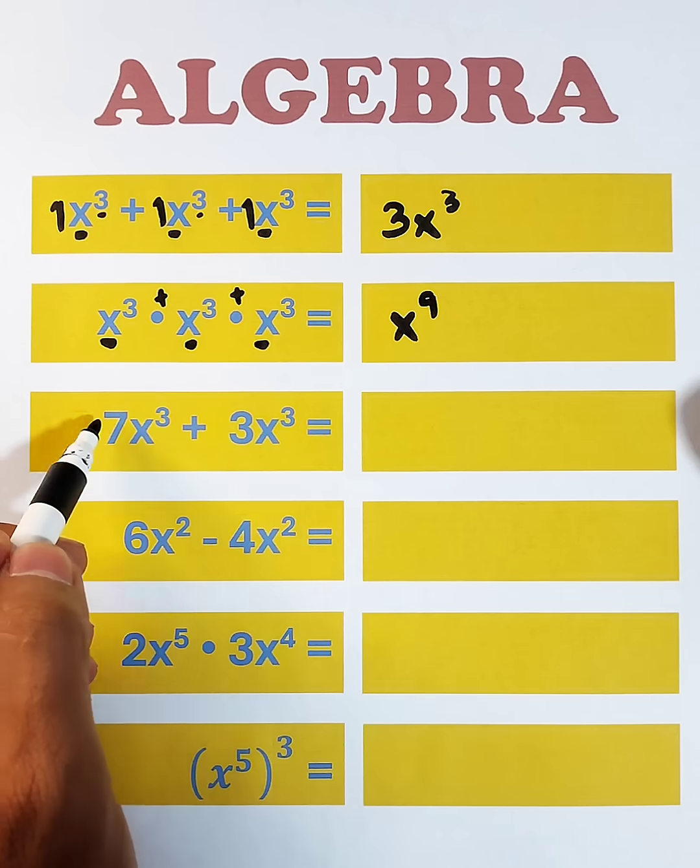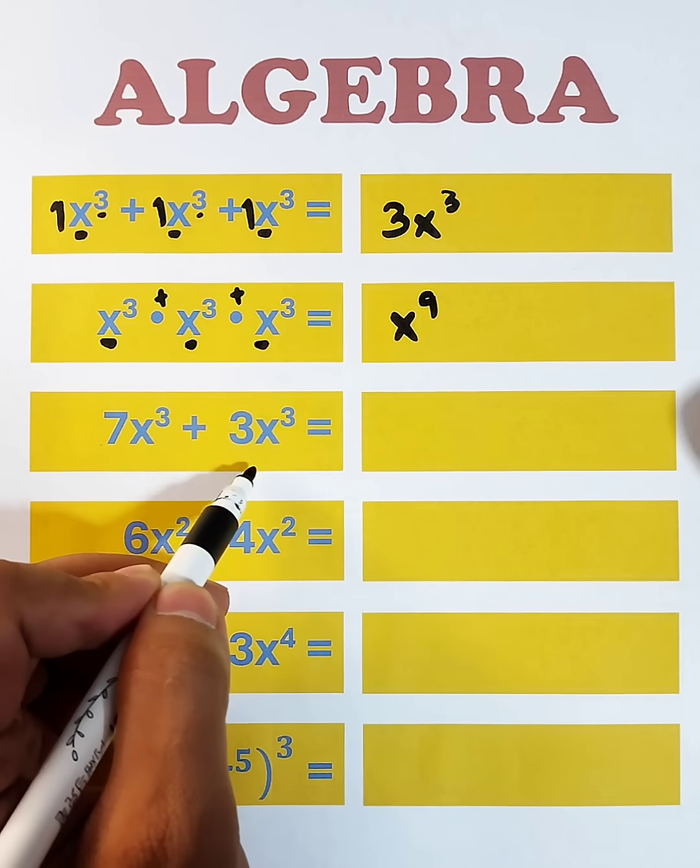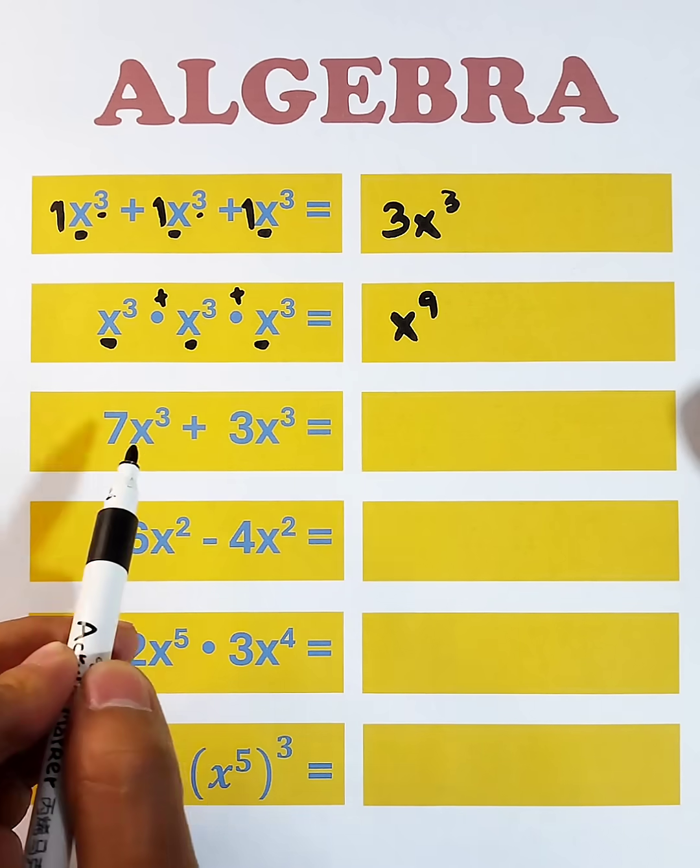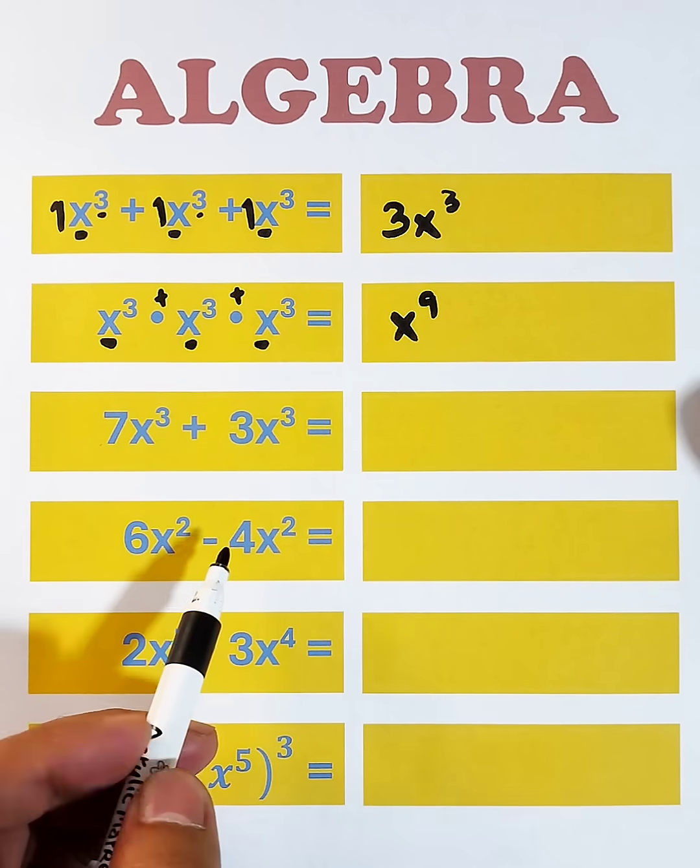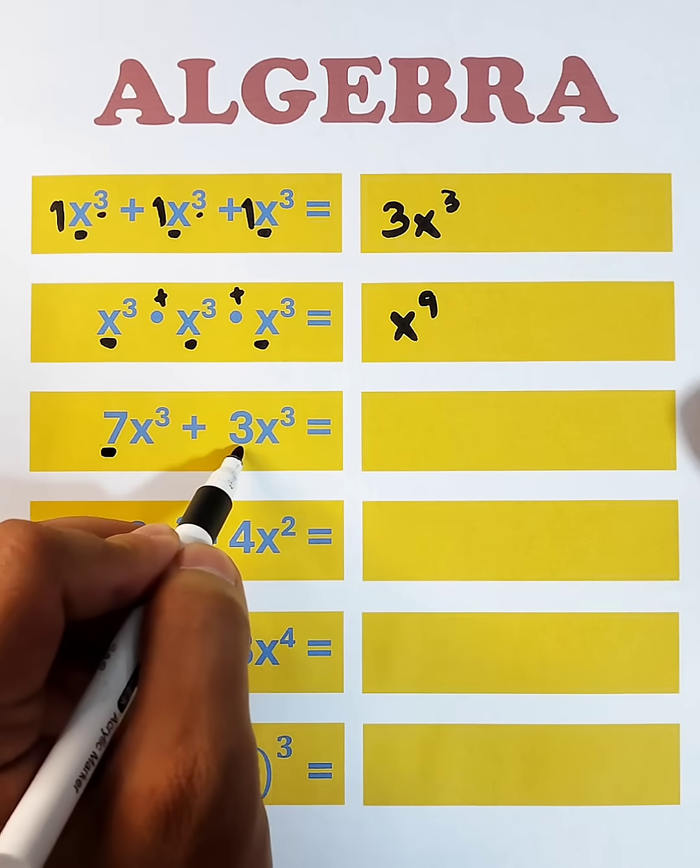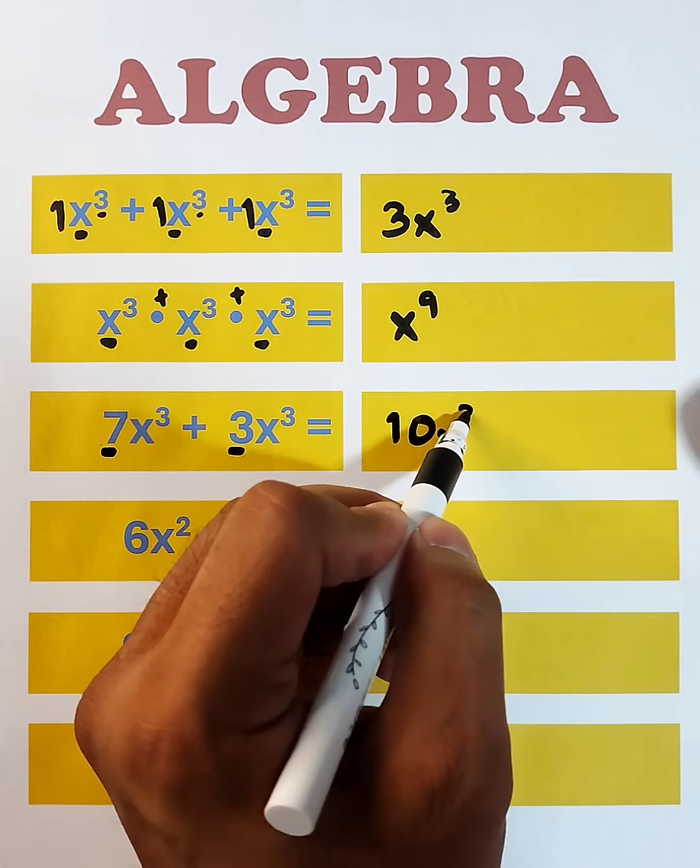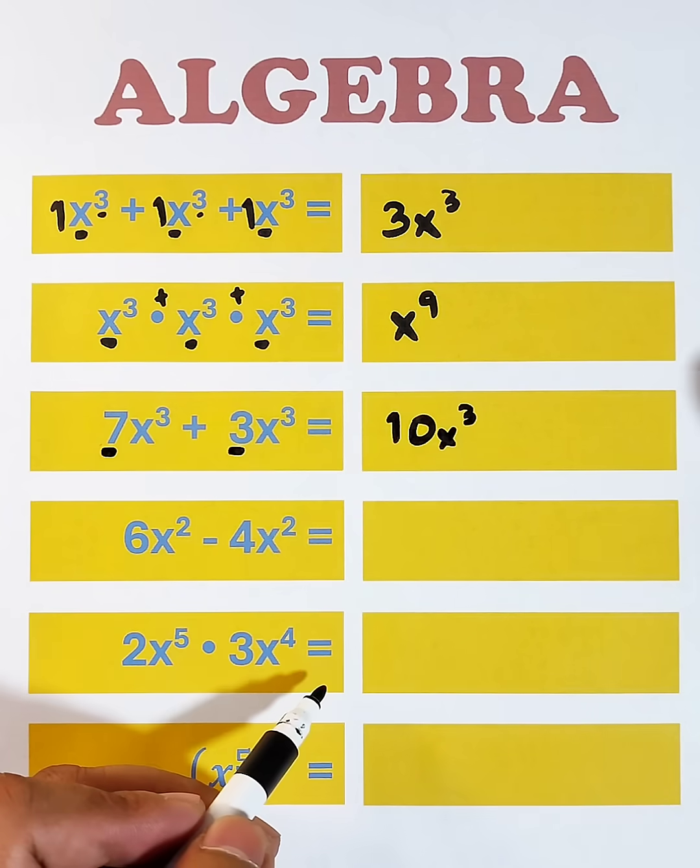Next, we have 7x cubed plus 3x cubed. The basic rule here again, we need same variable and same exponent. So we can add 7 and 3, that would be 10, then copy your x cubed. And the answer is 10x cubed.